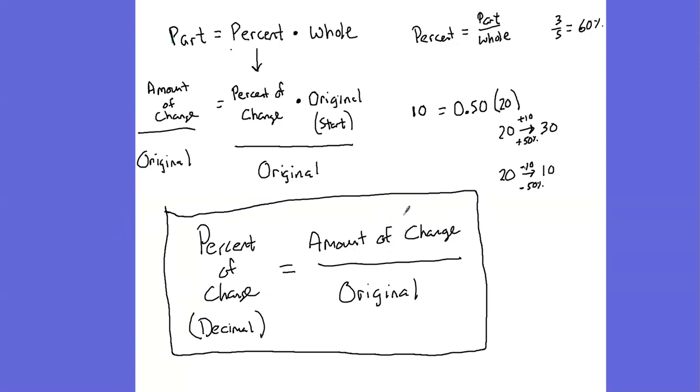And if you look in the textbook, they're going to write this amount of change in kind of a fancy way. But just think of it as, how much did you go up or how much did you go down? If it's a percentage of increase, your book says to take your new amount and subtract the original amount.